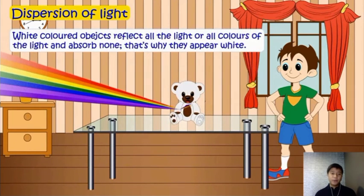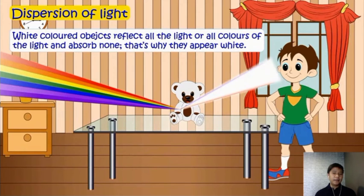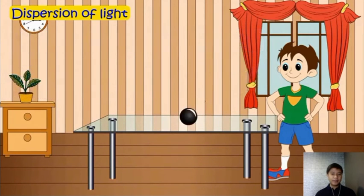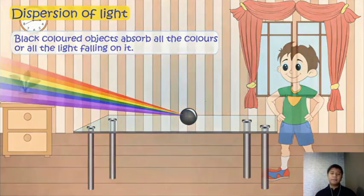How about white? White colored objects reflect all the lights or all colors of the light and absorb none. That's why they appear white. Black colored objects absorb all the colors or all the light. That's why we always see black.